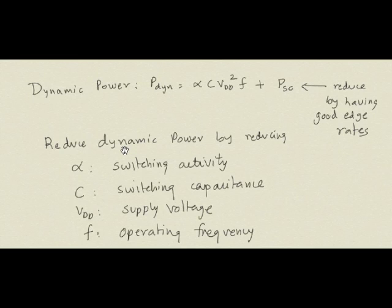How do we reduce dynamic power? To get a feel for the scale: a laptop processor dissipates about 10 watts, a high-end server processor about 100 watts, and a cell phone processor about 2 watts. These are typical power dissipation levels — roughly 1, 10, and 100 watts depending on the application.